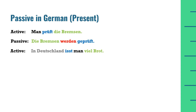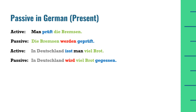Active: 'In Deutschland isst man viel Brot' — Germany mein log bahut zyada bread khaate hain. Aisi sentences mein jo preposition ho jaise 'in Deutschland', woh as it is rehti hai. Passive: 'In Deutschland wird viel Brot gegessen'. 'In Deutschland' as it is, phir 'wird', phir 'viel Brot', aur last position par participle 'gegessen' jo 'essen' ki participle form hai.